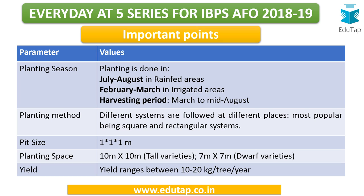Other important parameters: planting is done in July and August for rain-fed areas, and February to March for irrigated areas. The harvesting period is March to mid-August. On the topic of harvesting, recall that some fruits continue to ripen even after being plucked from the tree — these are called climacteric fruits — while others stop ripening once plucked, which are non-climacteric. As a homework question: does mango fall in the category of climacteric or non-climacteric? Please mention your answer in the comments below.